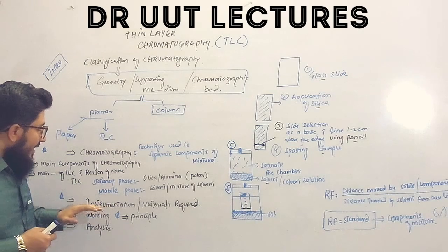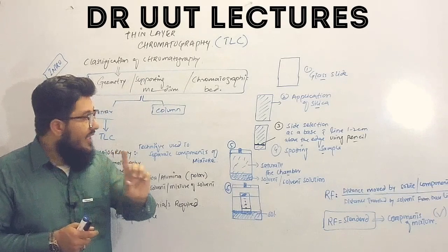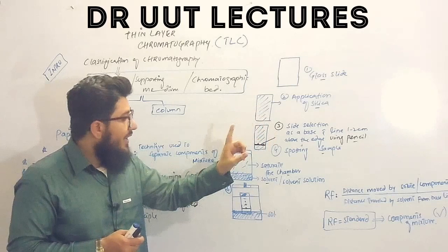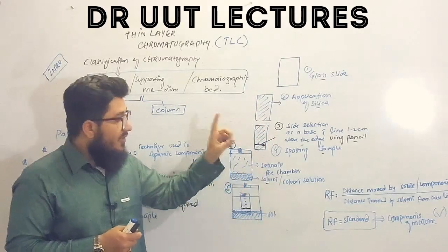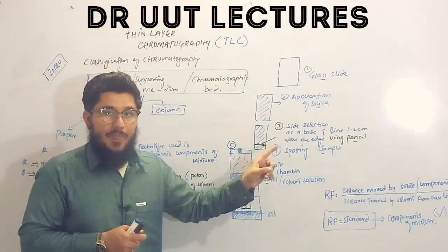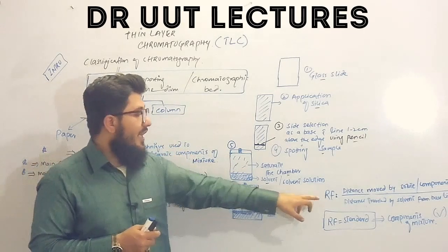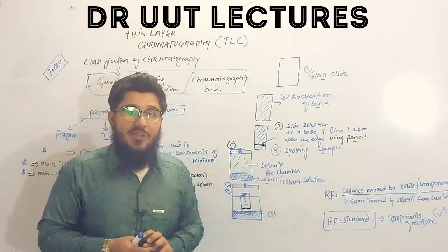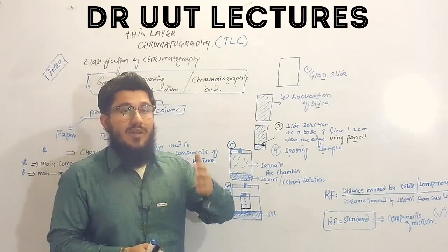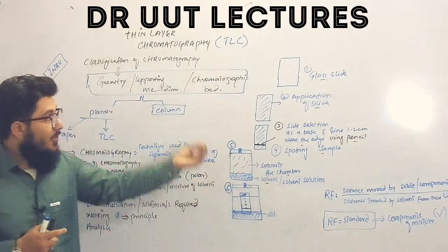Now let's look at the instrumentation or materials required to perform TLC. We need a glass slide, silica as our stationary phase, a solvent as our mobile phase, a pencil, a sample, and a ruler or scale for measuring the RF — retardation or retention factor.